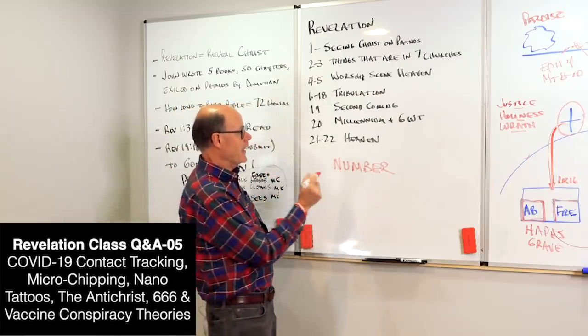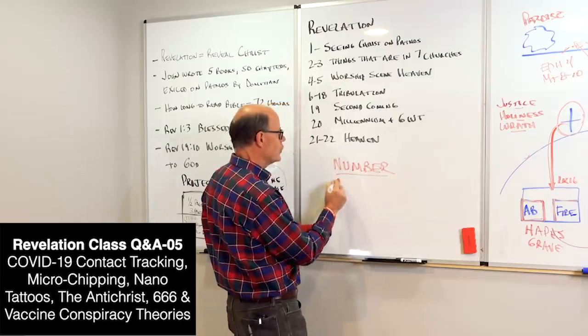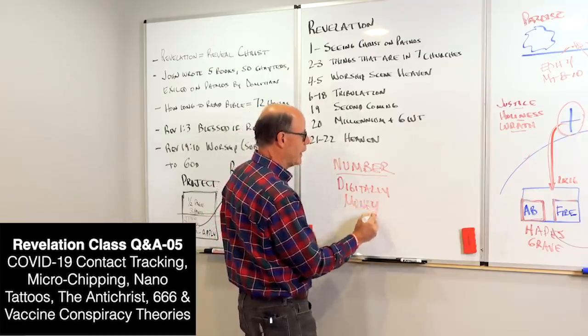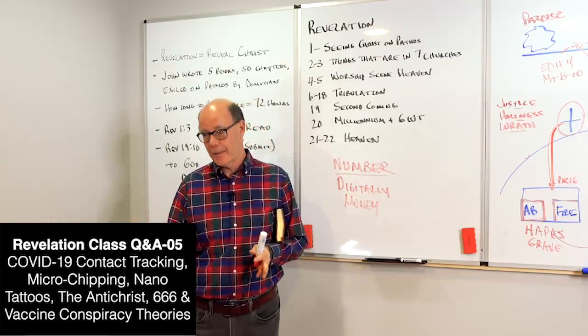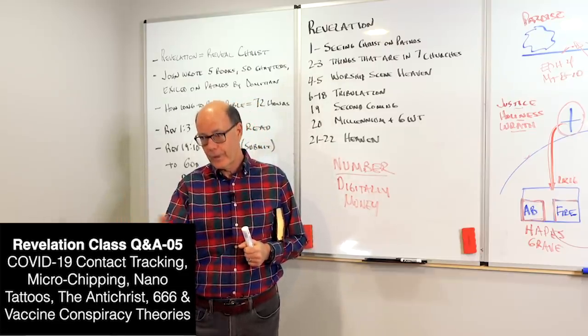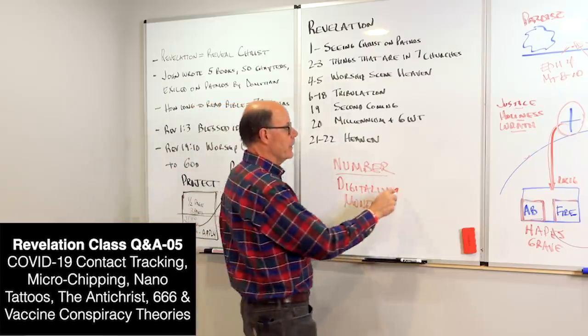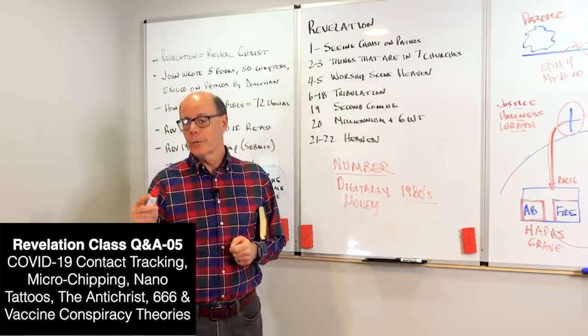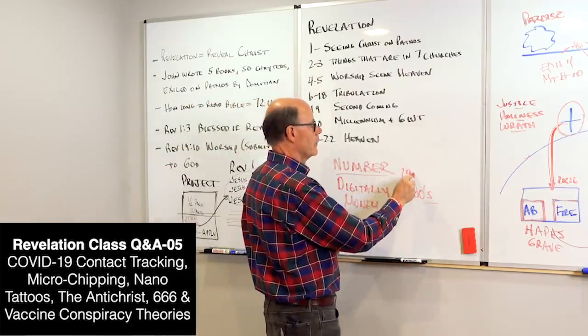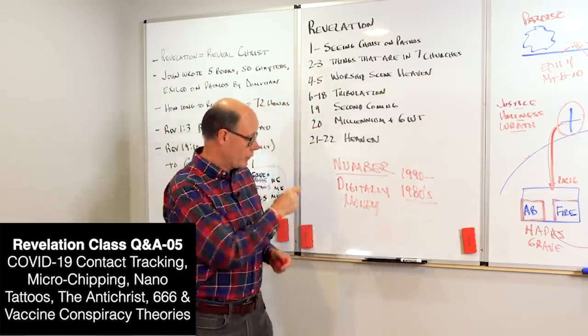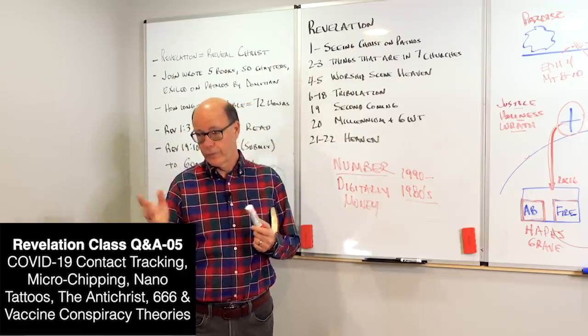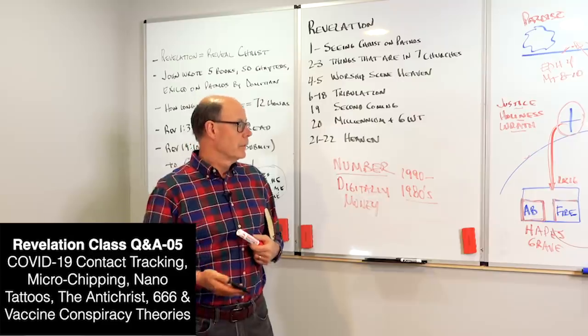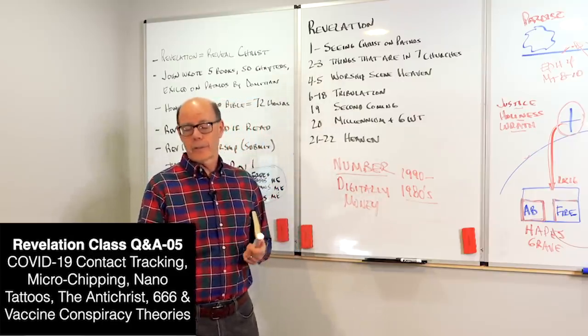The important part is that the Antichrist is going to digitally control money. You cannot do commerce. You cannot buy or sell without his number. Now, let me remind you that starting in the 1980s, before all of the students, or most of them were even born, currency went digital. By the 1990s, credit cards, which is digital money, was universal. Now, I mean, between PayPal and Apple Pay and Venmo and Zelle, I don't even know all of them, you know, Square Cash.